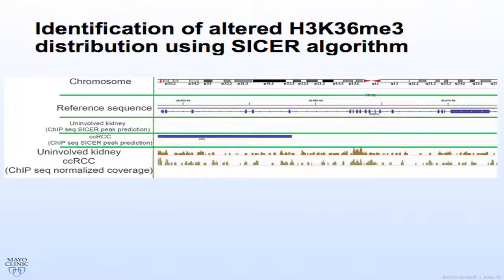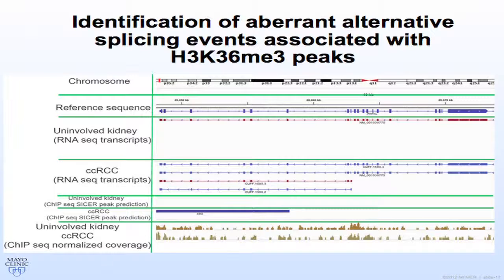The next step was to apply the CISER algorithm, which looks at ChIP sequencing data, to overlay ChIP-seq data with RNA-seq data and see if there's a correlation between differences in histone 3-lysine 36 modifications and our RNA sequencing findings. The CISER peak algorithm detected a difference in H3K36me3 peak islands in a particular genomic region compared to uninvolved kidney. When we overlay the two datasets, we can identify which alternative splicing events are associated with alterations in histone 3-lysine 36 trimethylation.